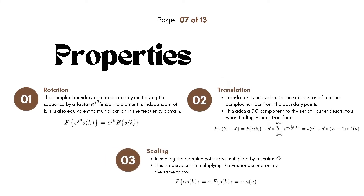Now let's talk about the properties of Fourier descriptors. First, rotation: in a complex plane, a complex number can be rotated by multiplying it by a factor e^(jθ), where θ is the angle of rotation. Since e^(jθ) is independent of k, it is considered a scalar or constant. Therefore, the Fourier transform of e^(jθ) times s(k) is equivalent to e^(jθ) times the Fourier transform of s(k). Thus, multiplying the complex numbers by e^(jθ) is equivalent to multiplying the Fourier descriptors by the same factor in the frequency domain.